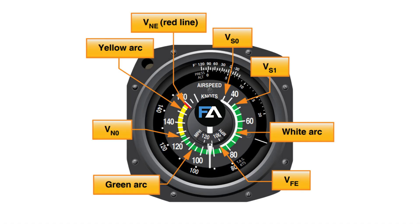Let's take a look at your airspeed indicator. The white arc shows the flap operating range. At the top, you'll find V-SO, your stall speed in landing configuration. Moving clockwise, you'll see V-S-1, the stall speed in clean configuration. The green arc is your normal operating range, with V-NO, your maximum structural cruising speed, separating it from the yellow arc.